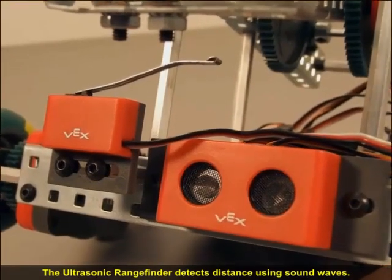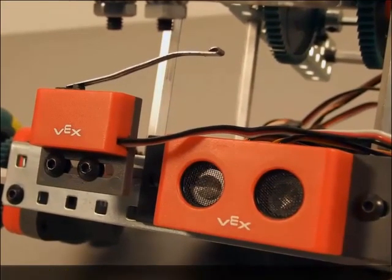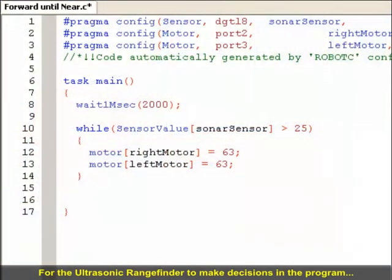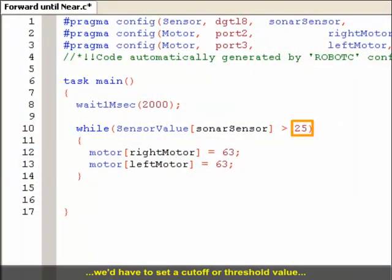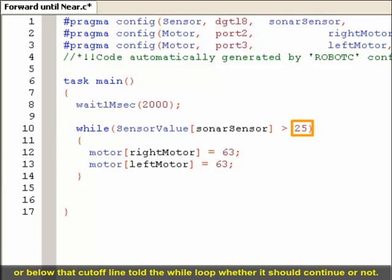The ultrasonic rangefinder detects distance using sound waves. For the ultrasonic rangefinder to make decisions in the program, we had to set a cutoff or threshold value to define what was too close or too far. Once we set a threshold, seeing whether the sensor value was above or below that cutoff line told the while loop whether it should continue or not.